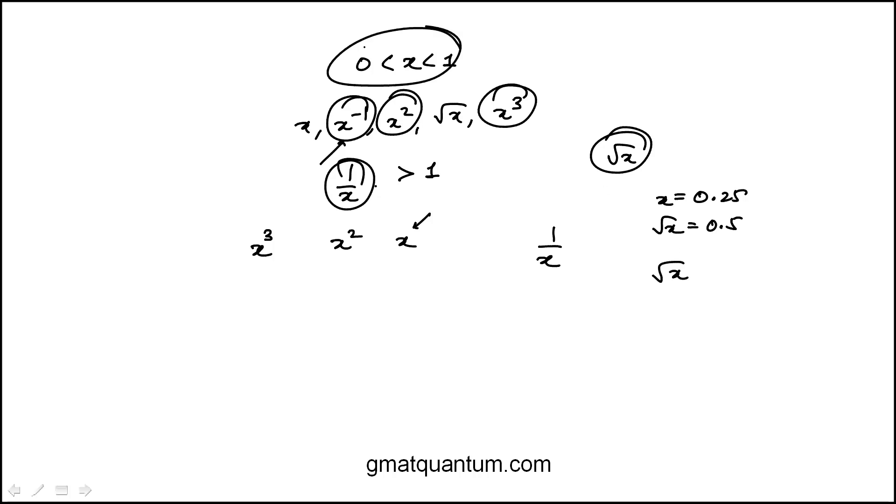So in general, for x between 0 and 1, square root of x is greater than x. So this is our ranking. They're asking for the median or the middle value, which is x, and that's choice A.